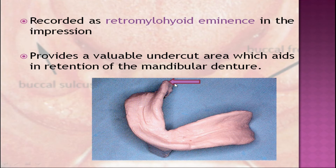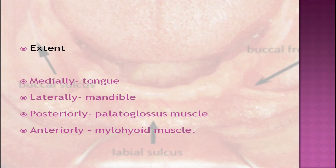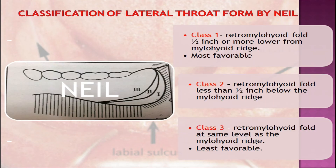The retromylohyoid fossa provides a valuable undercut area and aids in retention of the mandibular denture. The lateral throat form is a part of the mouth corresponding to the distolingual extension of the denture. This area serves as a limiting factor in the downward and backward extension of the lingual flange. It extends medially to the tongue, laterally to the mandible, posteriorly to the palatoglossus muscle, and anteriorly to the mylohyoid muscle. A classification of the lateral throat form was given by Neil, showing how retention of the lower denture depends on the extent of the denture into this area.